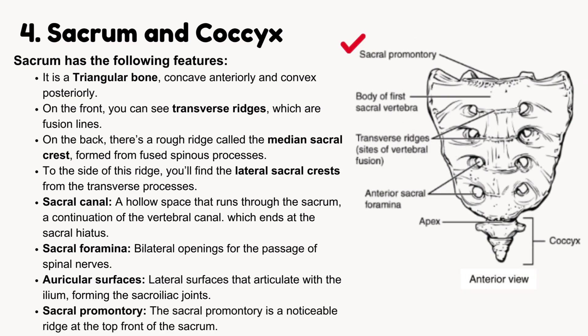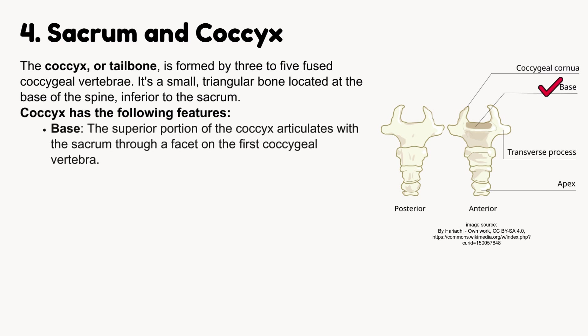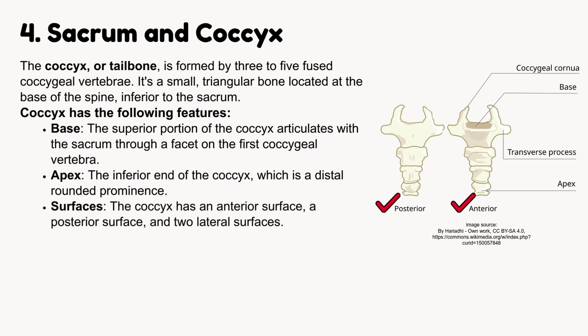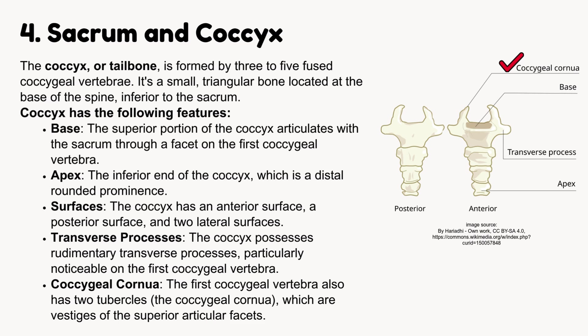Sacral promontory is a noticeable ridge at the top front of the sacrum. The coccyx, or tailbone, is formed by three to five fused coccygeal vertebrae — a small, triangular bone at the base of the spine, inferior to the sacrum. The coccyx has a base, where the superior portion articulates with the sacrum through a facet on the first coccygeal vertebra; an apex, which is the inferior distal rounded prominence; anterior, posterior, and two lateral surfaces; rudimentary transverse processes, particularly noticeable on the first coccygeal vertebra; and coccygeal cornua — two tubercles on the first coccygeal vertebra that are vestiges of the superior articular facets.